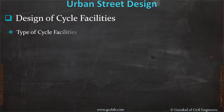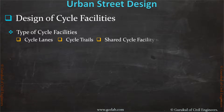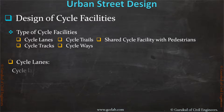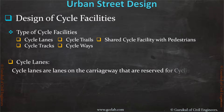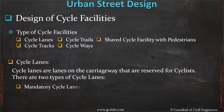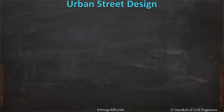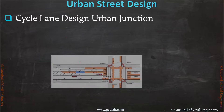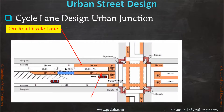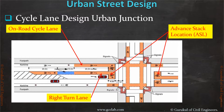There are five types of cycle facilities: cycle lane, cycle trail, shared cycle facilities with pedestrians, cycle tracks, and cycle ways. Cycle lanes are lanes on the carriageway reserved for cyclists, and there are two types — mandatory cycle lanes and advisory cycle lanes. I will provide a complete understanding of cycle lane design at urban junctions, including how to provide on-road cycle lanes, right turn pockets, and ASL — Advanced Stop Locations — for cyclists.